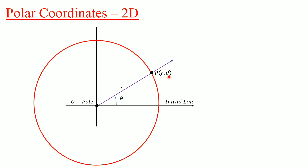Now we will see the relation between Cartesian and polar coordinates. If we take the projection of point P onto the x-axis or initial line, we get point Q, and the distance OQ is x — the same x-coordinate as in Cartesian coordinates. Taking the projection of point P on the y-axis gives the y-distance.